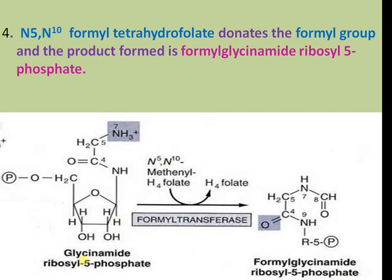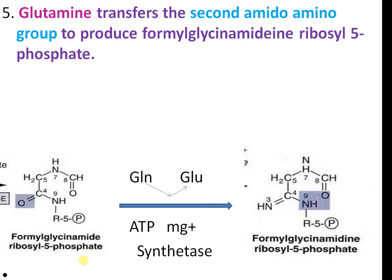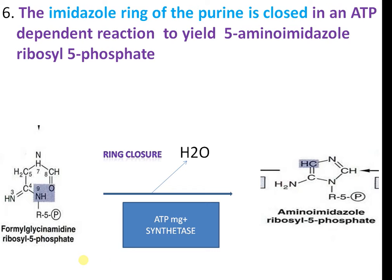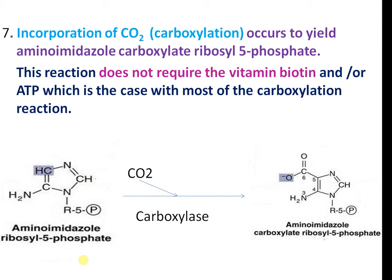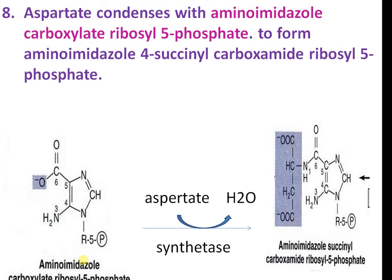N5,N10-formyl tetrahydrofolate donates a formyl group and the product is formylglycinamide ribosyl 5-phosphate. Glutamyl transferase transfers a second amide amino group to produce formylglycinamidine ribosyl 5-phosphate. Ring closure occurs with ATP to yield 5-aminoimidazole ribosyl 5-phosphate. Incorporation of carbon dioxide by carboxylation yields aminoimidazole carboxylate ribosyl 5-phosphate. This reaction does not require the vitamin biotin, unlike most carboxylation reactions. Aspartate then condenses with aminoimidazole carboxylate ribosyl 5-phosphate to form aminoimidazole-4-succinyl carboxylate ribosyl 5-phosphate.